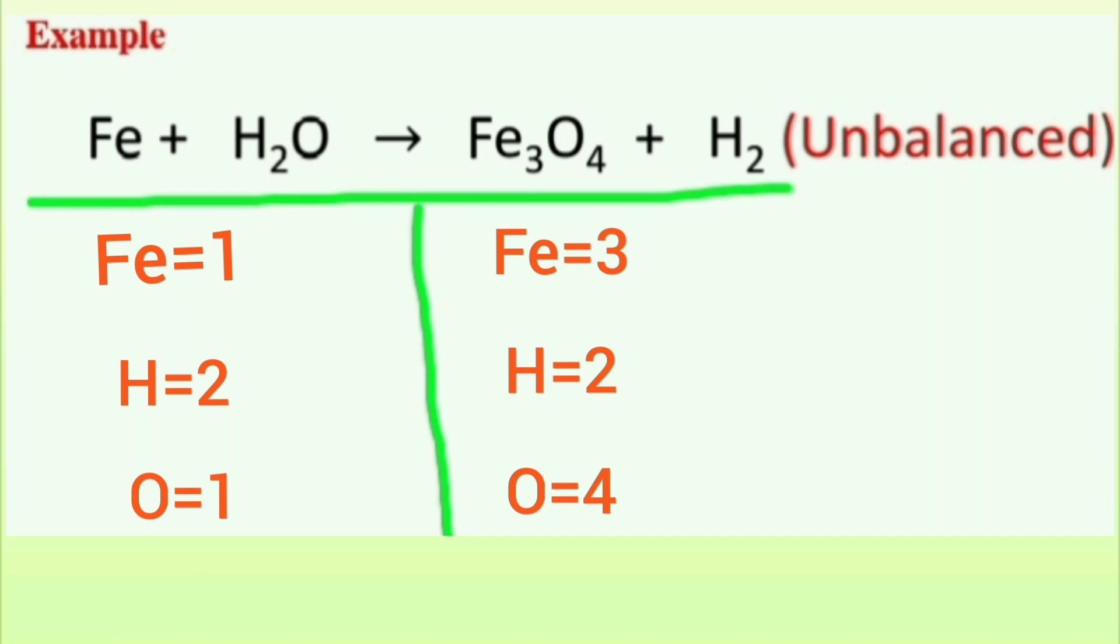Step two: put the appropriate coefficients to balance the chemical equation. You can see we have two hydrogen on each side of the equation, but iron atoms on reactant side is one and product side is three.